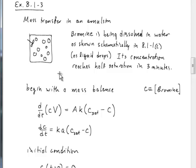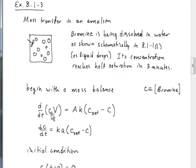The first thing we're going to do is begin with a mass balance. C here is the concentration of bromine out in solution around the bubbles. We're doing a mass balance on the solvent fraction of the emulsion. The accumulation term is the derivative with respect to time of the total amount of bromine in solution — the volume of solution multiplied by the concentration of bromine — and that must equal the rate at which bromine is crossing the boundary between solution and the droplets.